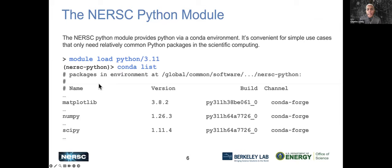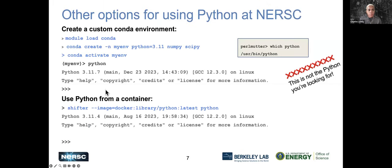If you do a 'conda list', it's going to give you an exhaustive list of different packages you'd be able to install. To create a custom Conda environment, it's easy — our documentation has detailed examples showing how to customize and create different Conda environments. You can specify the packages and libraries you'll need to use as well.